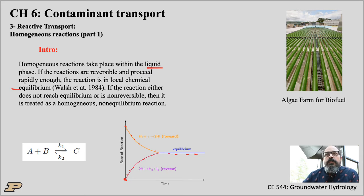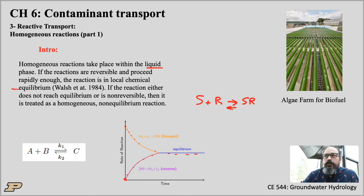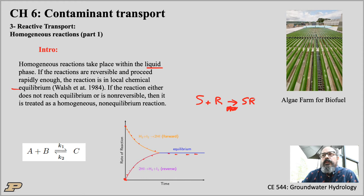If the reaction doesn't reach equilibrium or is non-reversible — for example, precipitation — then it proceeds only one way. We saw some sorption problems last time where there was a reversible reaction when the sorbate dissociates from the surface and goes back into solution. But if two species associate and precipitate, that reaction is irreversible — the precipitate is out of solution and there is no equilibrium. We review equilibrium first, then get into kinetics.